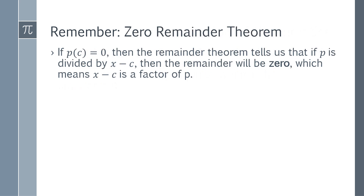Let's not forget the zero remainder theorem. It states that if p(c) equals zero, then the remainder theorem tells us that when p is divided by x minus c, the remainder is zero, which means x minus c is a factor of p. This is going to be essential for today's lesson.